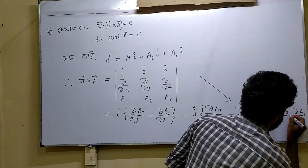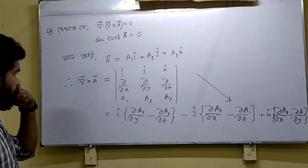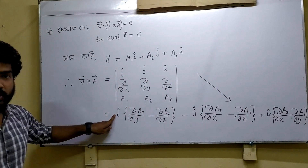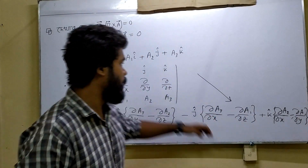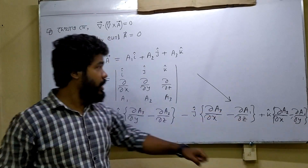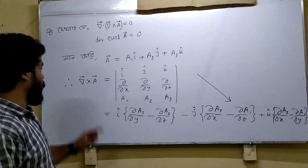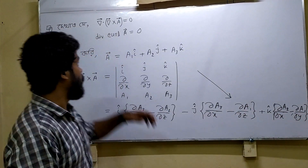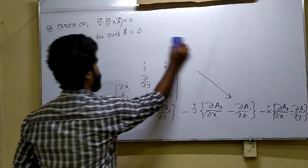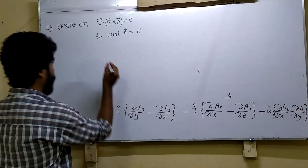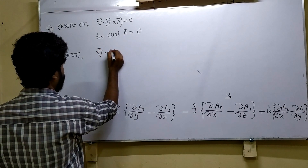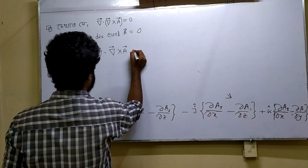Del y A1 appears in the expression. So nabla cross A gives us the full curl. We set up the determinant system with positive, negative, and positive signs for the cofactors. This sign pattern changes: i is positive, j is negative, and k is positive. So let's simplify this and compute nabla dot nabla cross A.